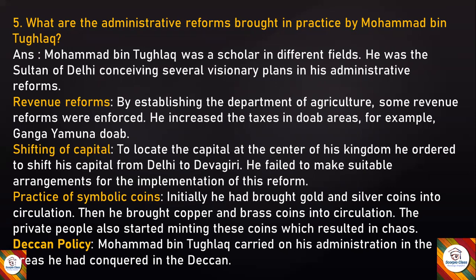Initially he had brought gold and silver coins into circulation; then he brought copper and brass coins into circulation. Private people also started minting these coins, which resulted in chaos. The next reform was the Deccan policy: Muhammad bin Tughlaq carried on his administration in the areas he had conquered in the Deccan. So these four reforms are: revenue reforms, shifting of capital, practice of symbolic coins, and Deccan policy.